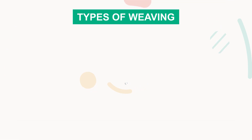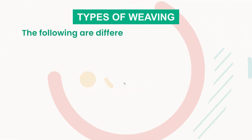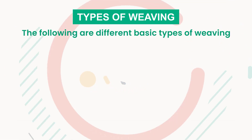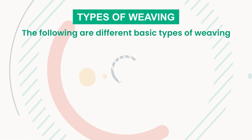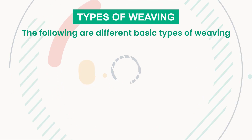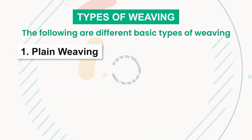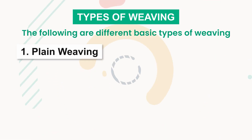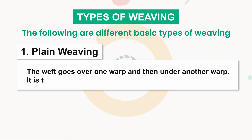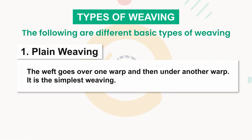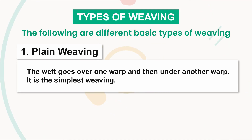The following are different basic types of weaving. Number one: plain weaving. The weft goes over one warp and then under another warp. It is the simplest weave.